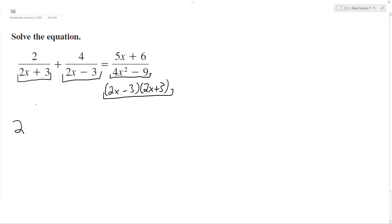So how we're going to do this is we'll have 2. So 2x plus 3 is missing 2x minus 3 and then plus 4 times 2x plus 3. And this is all over 2x minus 3, 2x plus 3.